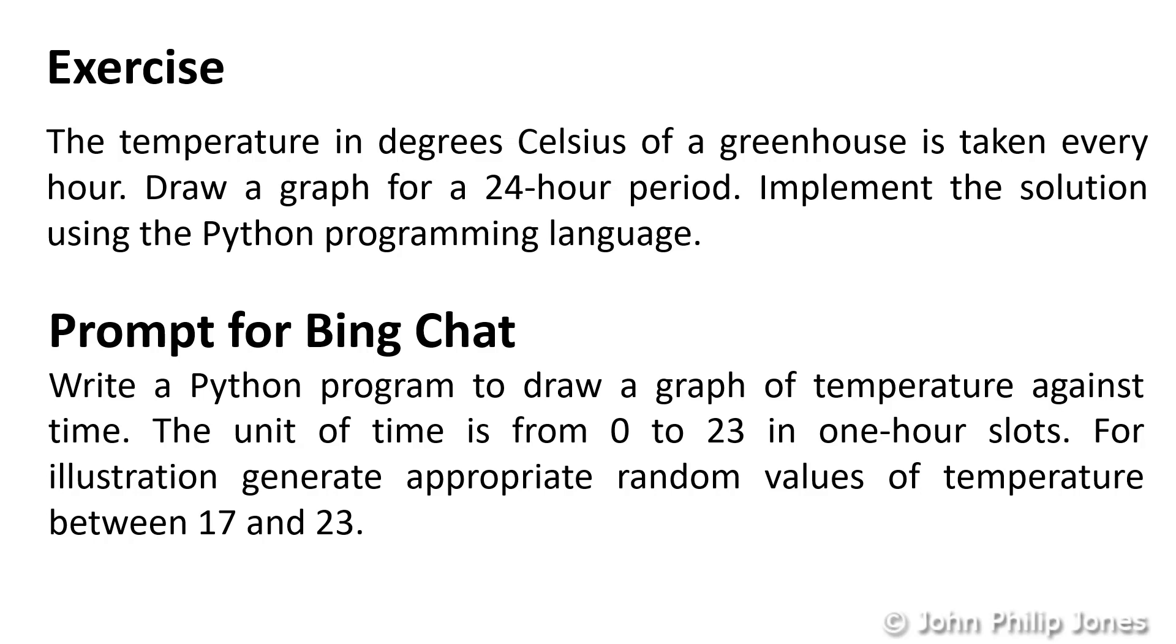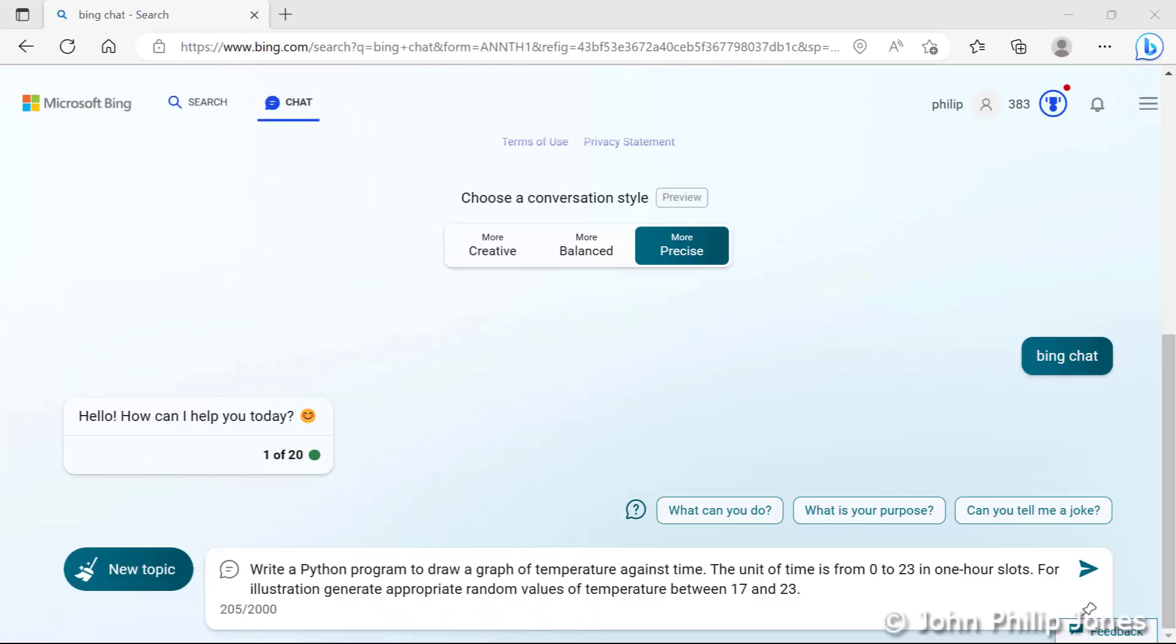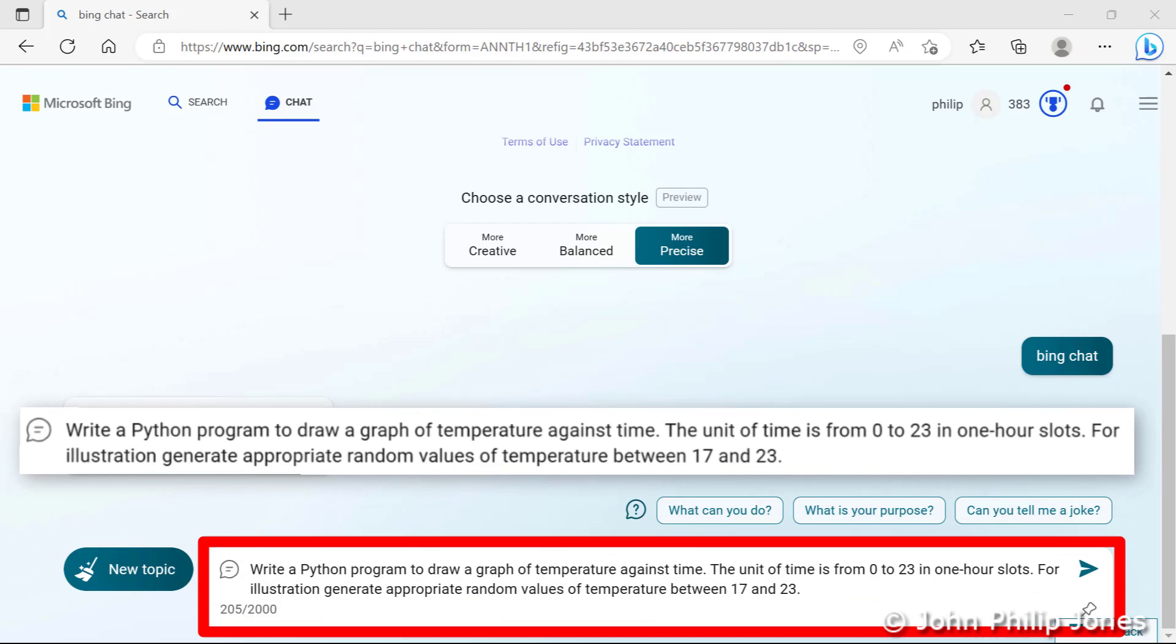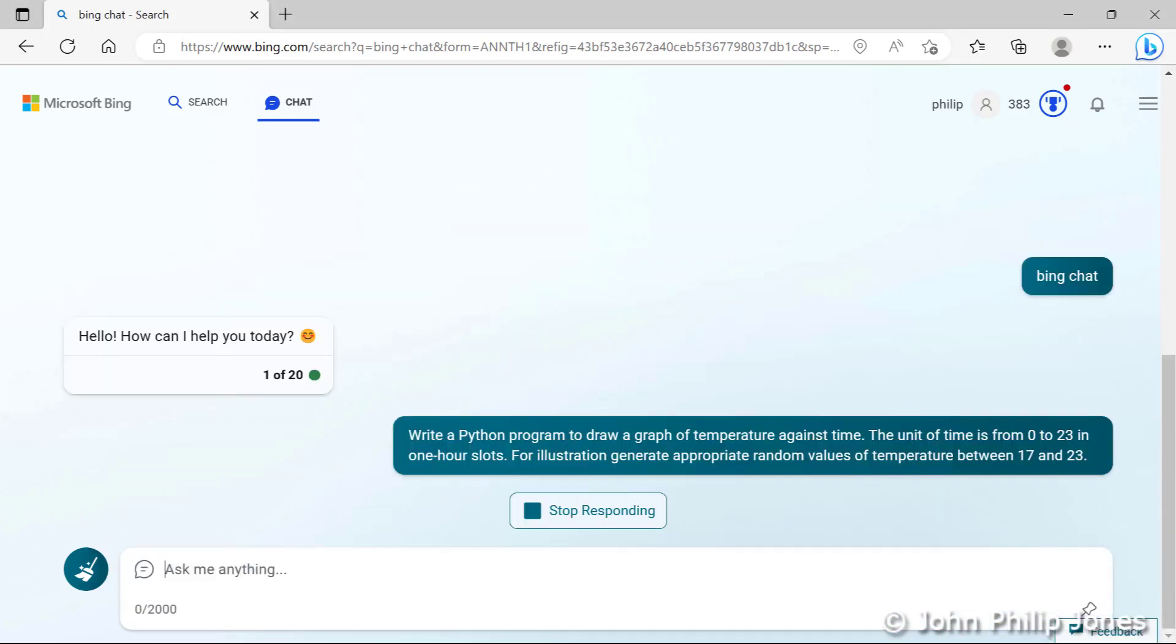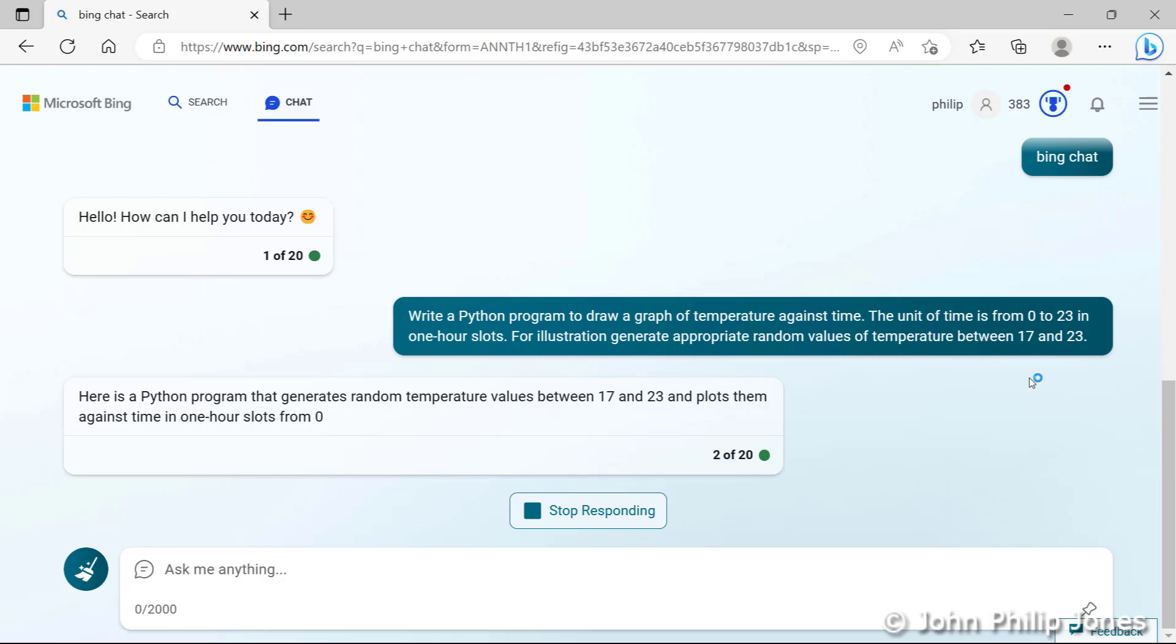So let's see how ChatGPT gets on with this prompt. You can see I've placed the prompt in here. I'm now going to click onto this arrow and let's see what happens. And it's going on now to produce me the Python program. Here it comes.